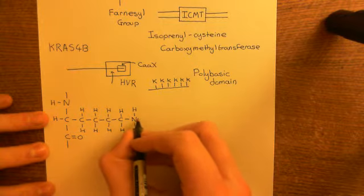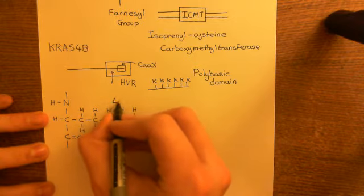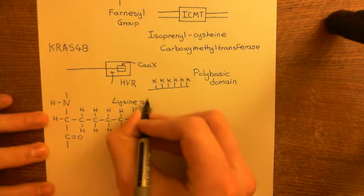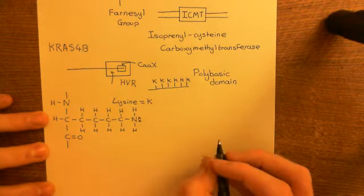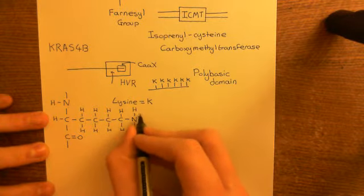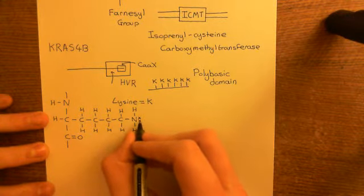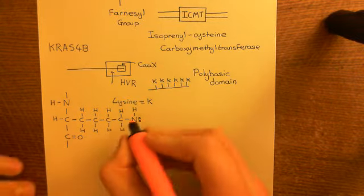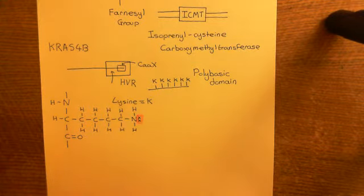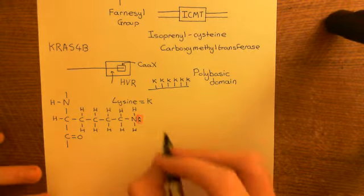This nitrogen has a lone pair of electrons on it. This is the structure of a lysine amino acid residue — single letter code K. Each one of these lysines on its amino group has a lone pair of electrons at its end, which is a centre of negative charge. Protons within the solution can come and associate with this centre of negative charge, because protons have a positive charge.